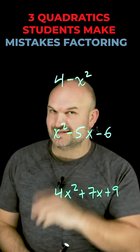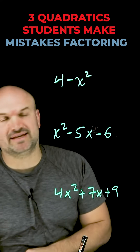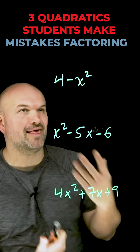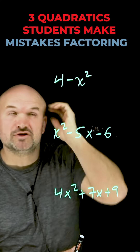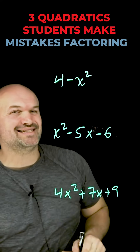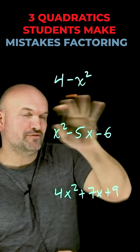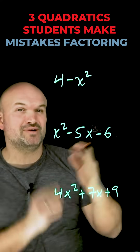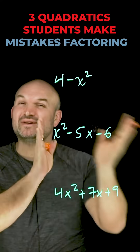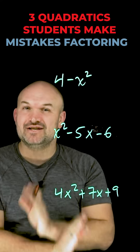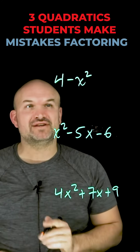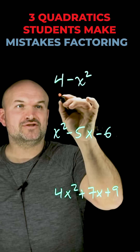Here are three quadratics that students make mistakes with the most. The first one is 4 minus x squared. The first thing you want to do here is rearrange this so it's in the form of a difference of two squares.